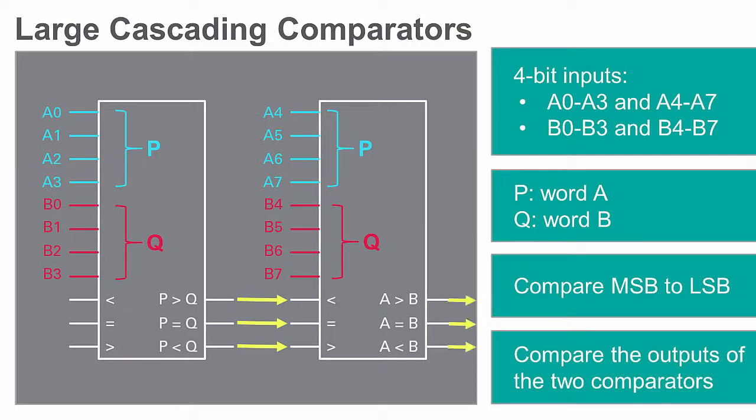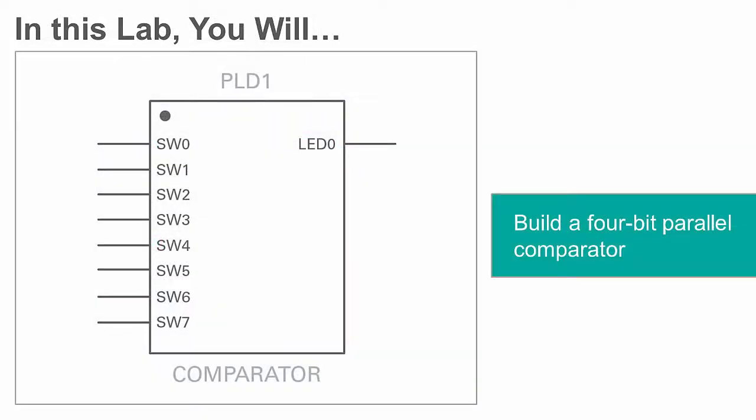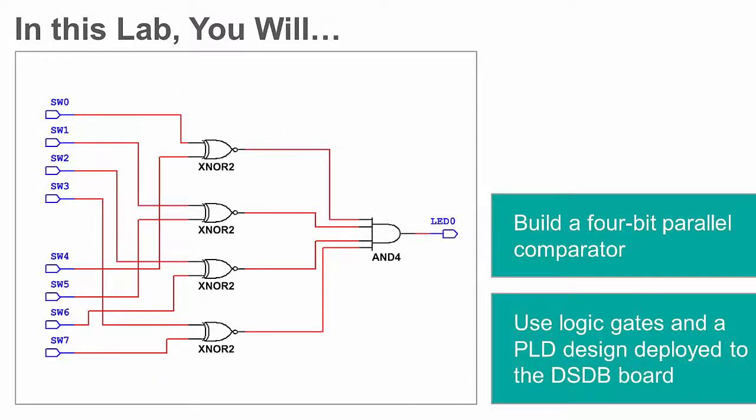Once the lowest order bits have been compared, the comparator stops. In this lab, you will build a 4-bit comparator and observe the output on the DSDB board.